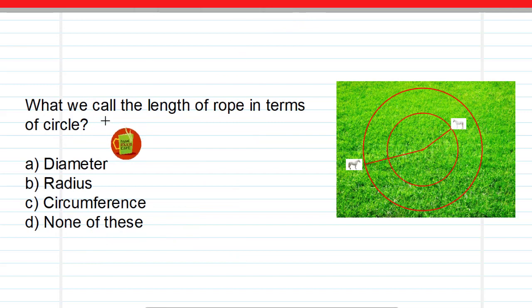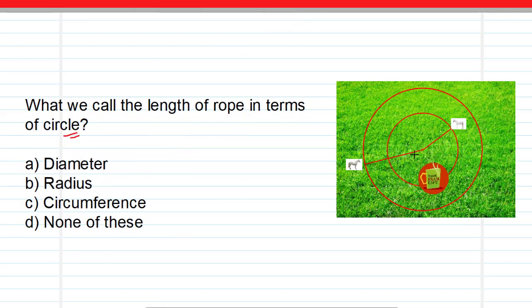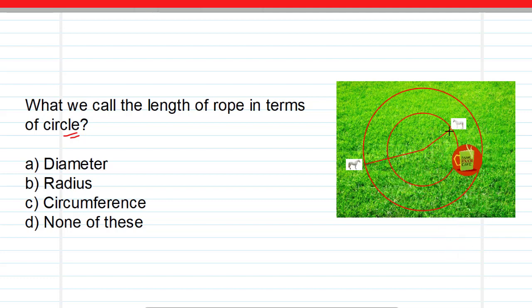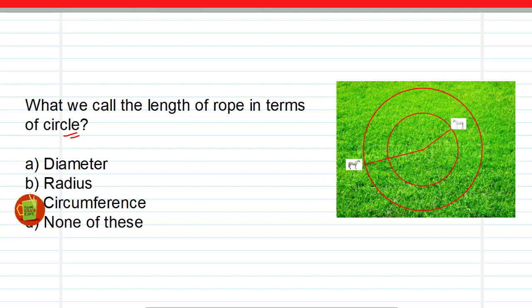The next question asks: what do we call the length of the rope — for Rohan's horse or Suraj's horse — in terms of a circle? We call it the radius. So option B, radius, is the correct answer.